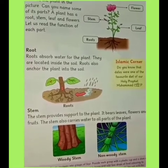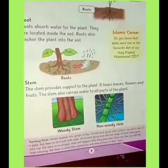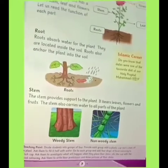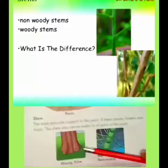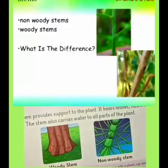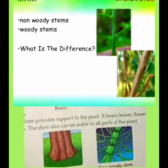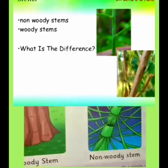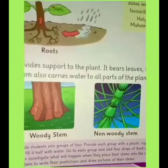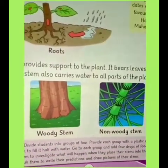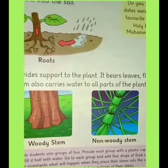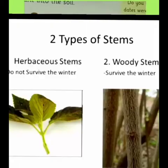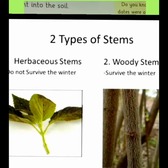There are two kinds of stem. Tane ki do kismein hoti hain. Hamare bade bade darakht hote hain jinaka tana lakdi ka hota hai. Aur jo chhote paudhe hote hain unka tana hare colour ka hota hai aur usme lakdi mojood nahi hoti.